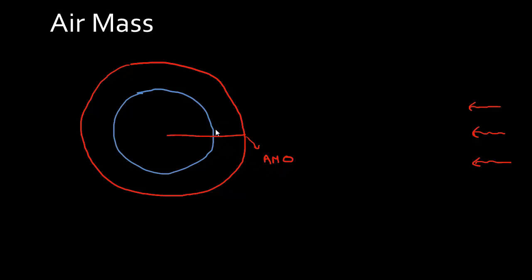AM 1 corresponds to the minimum amount of air mass or atmosphere that the radiation has to travel through. It corresponds to the point when you're sitting directly at the equator and the sun is shining essentially right overhead. This corresponds to an air mass of 1.